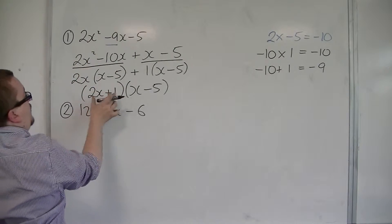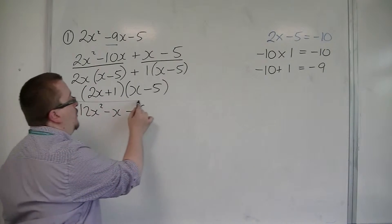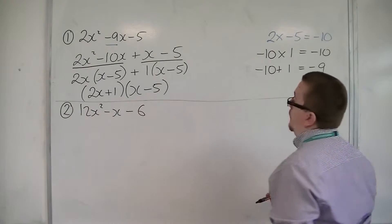The other one is made up of the 2x and the plus 1. So factorised, this is 2x plus 1, x minus 5. So we didn't need to do any kind of trial and error along the way.